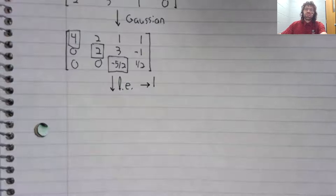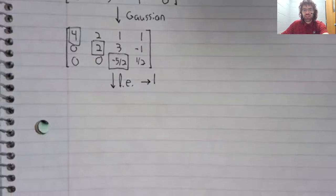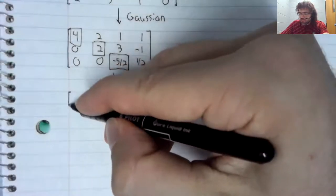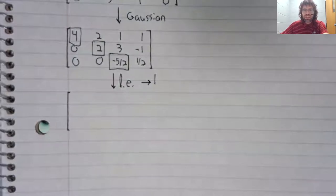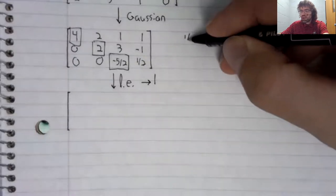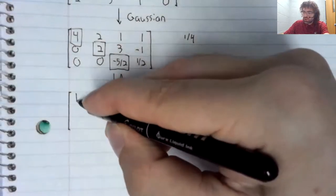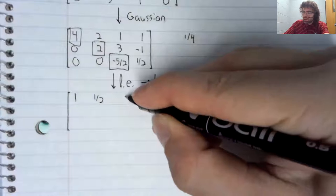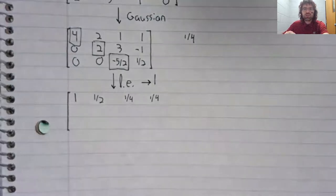Well, you might have noticed that there's an elementary row operation that we didn't use when we were learning Gaussian elimination. I said that we could multiply a row by a non-zero constant, and we have never had cause to use that elementary row operation. Now we will. Let's multiply this first row by one-fourth. You see that doing that turns the leading entry to one, just like we wanted.